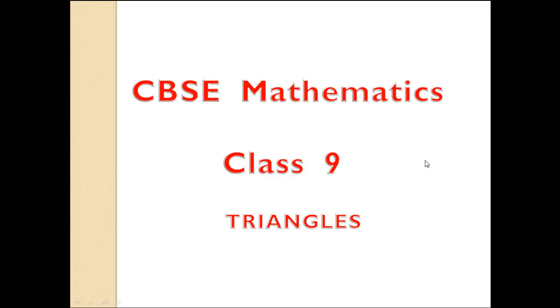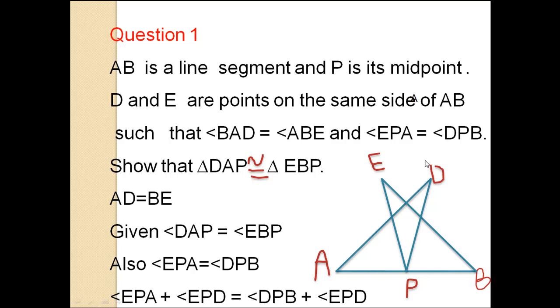CBSE Mathematics Class 9 Triangles, Question number 1. AB is a line segment and P is its midpoint.